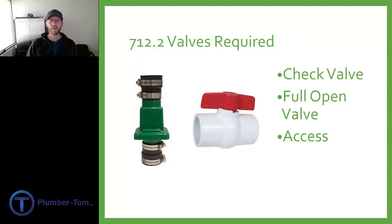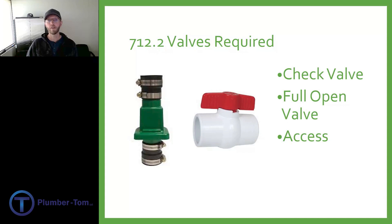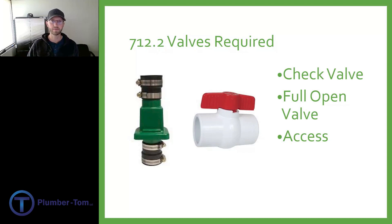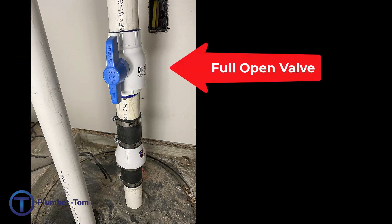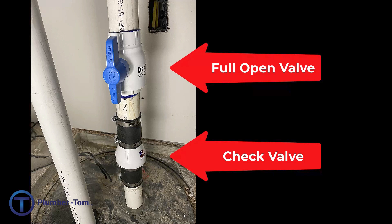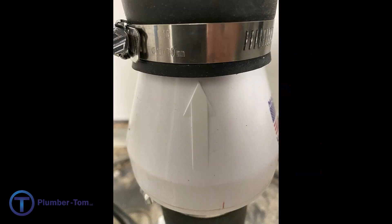712.2 says that valves are required. You would need a check valve to keep fluids from coming back into the sump after they've been pushed up, and a full-open valve so you can close it off for service. Access must also be provided. The full-open valve should go above the check valve so that when you need to service the check valve you can shut off the full-open valve and prevent sewage from flowing out when you take apart the check valve. Also remember that the check valve is directional — there will be an arrow and it must be installed in the correct orientation.